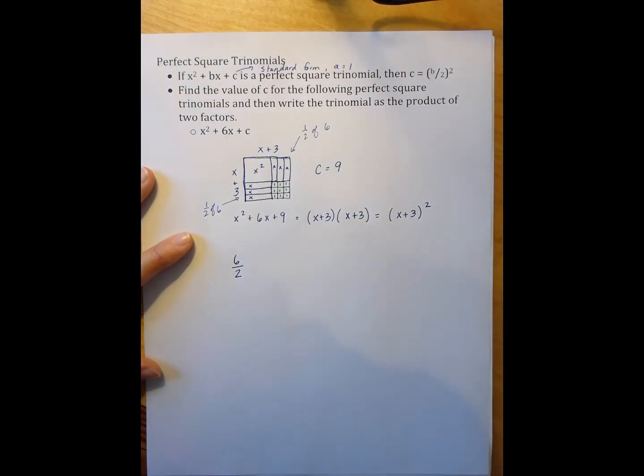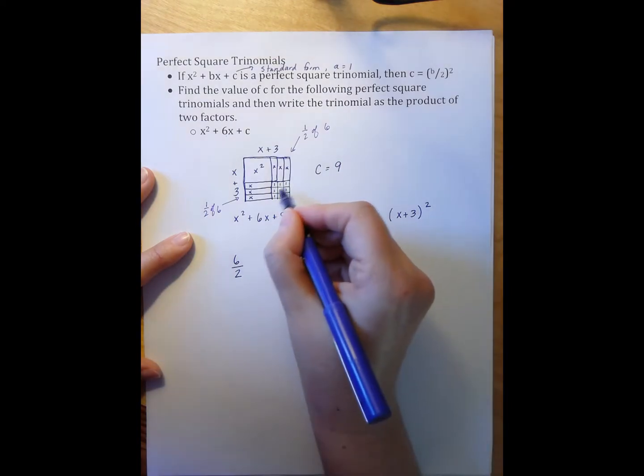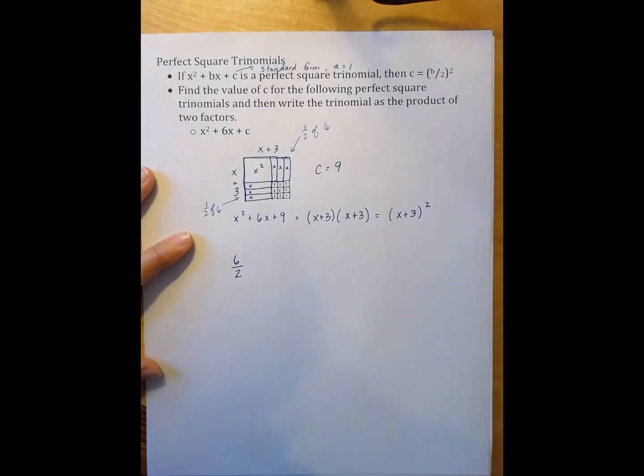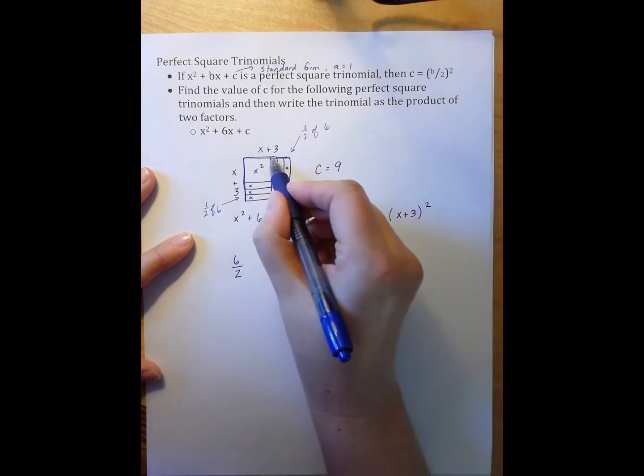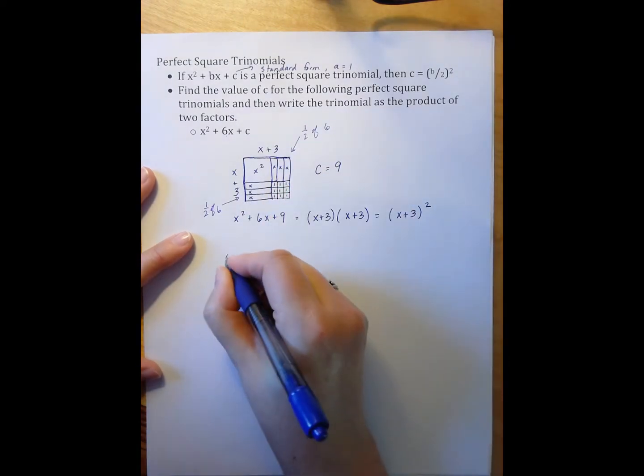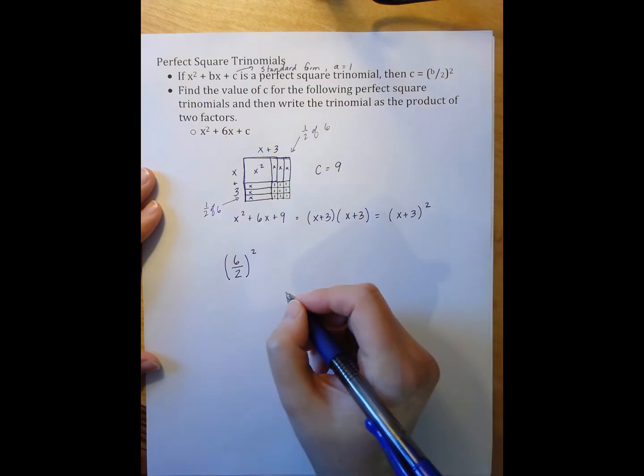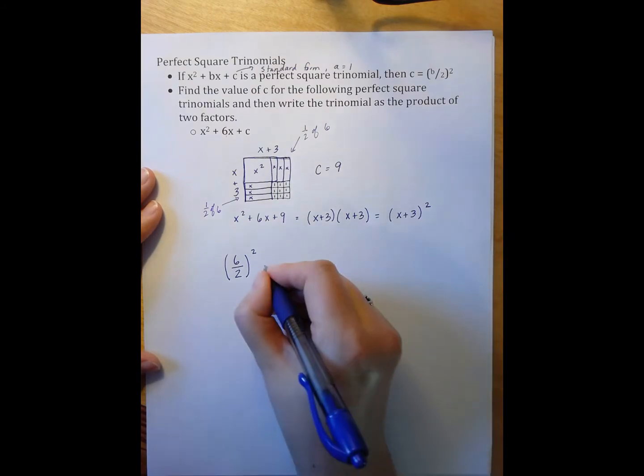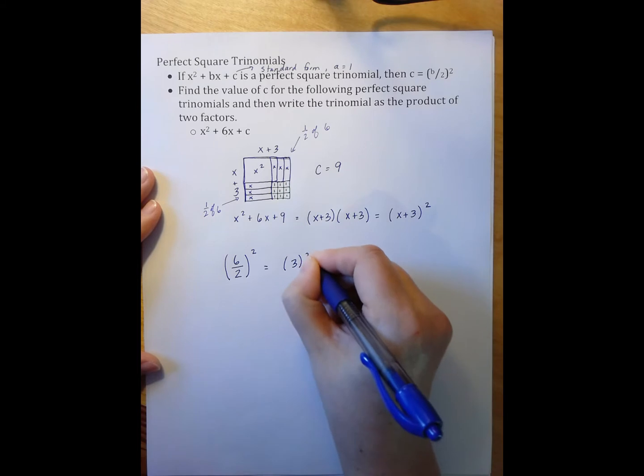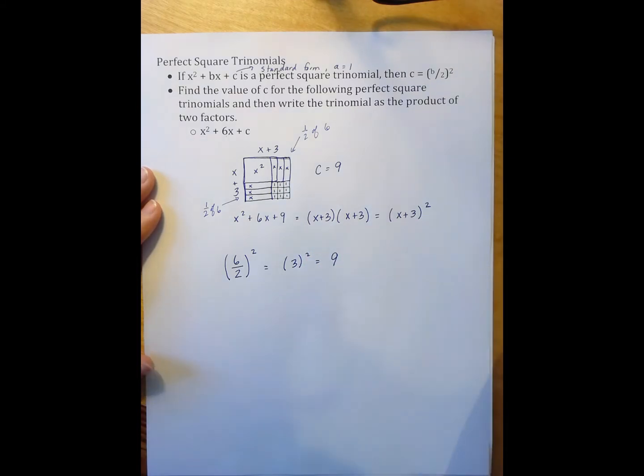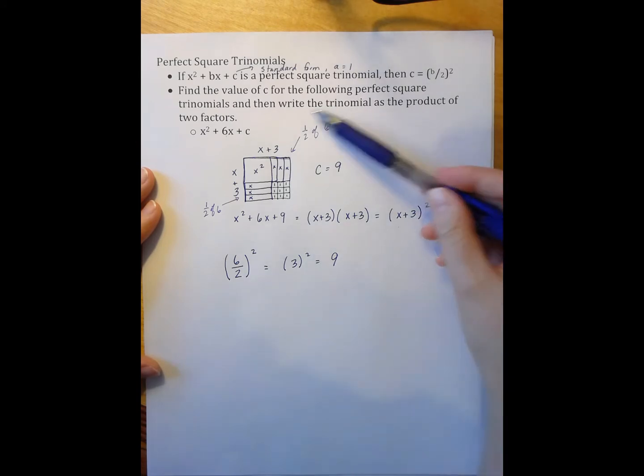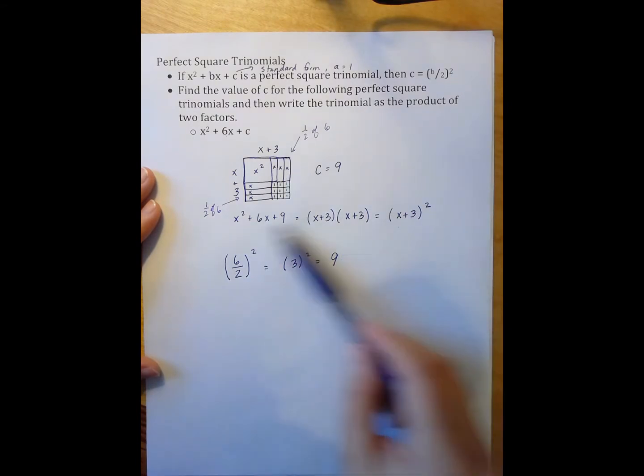And then in order to get the missing piece in here, I multiply my 3 times 3. So I square my value that I get when I split my x's into two piles. So this equals 3 squared, which equals 9, which yields the exact same answer as I got above. So depending upon where you're at, you could use the tile method or you could go straight to the pattern method.